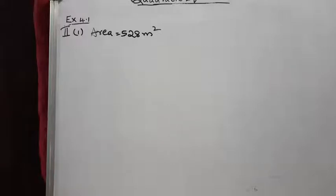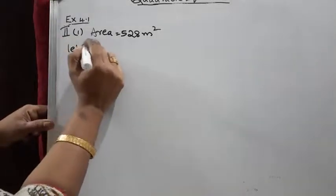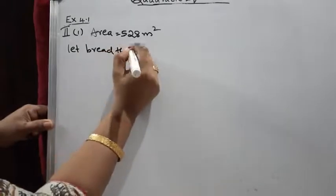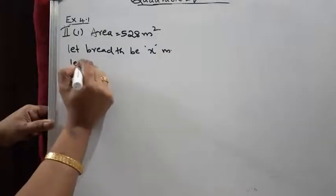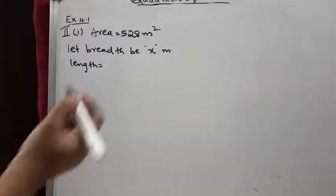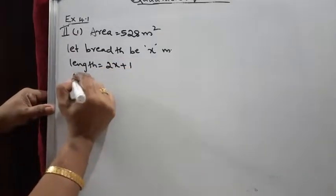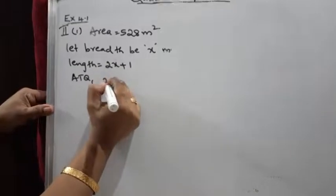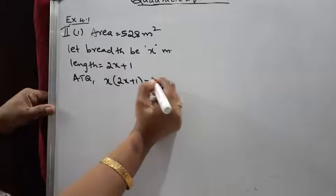Area equals length into breadth. The length is given in terms of breadth. Let breadth be x meters. Then length equals two times the breadth plus one, so length equals 2x + 1. According to the question, the product of length and breadth equals 528, so x into (2x + 1) = 528.